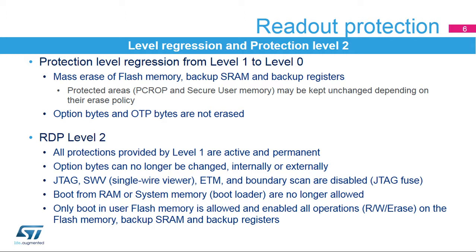Readout protection level 2 provides the same protection as in level 1, but the protection becomes permanent. Option bytes cannot be modified, so once the RDP protection is set to this level, there is no way to modify it, and level regression with mass erase mechanism is no longer possible. This level must only be considered in the final product when the development stage is completed. Note that to ensure that there are no back doors, this protection cannot be bypassed even at the ST factory.